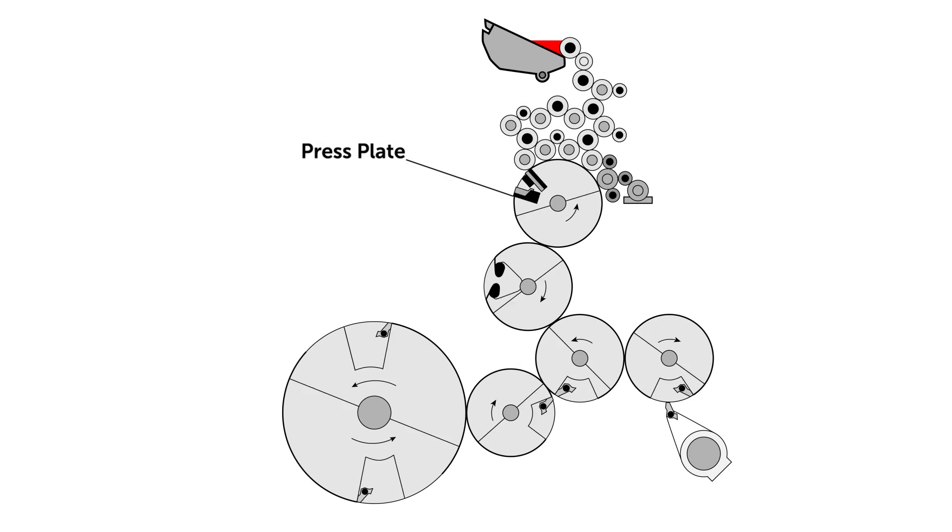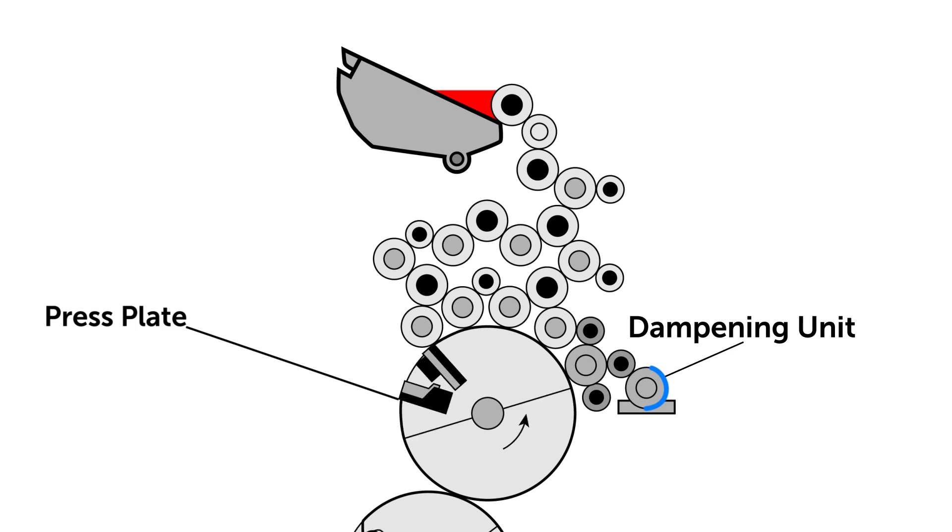As the press plate rotates, its first point of contact is the dampening unit. This has a mixture of water and other chemicals. This dampens the non-image area of the press plate.